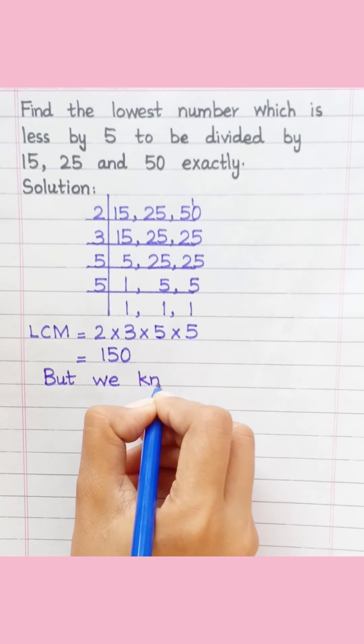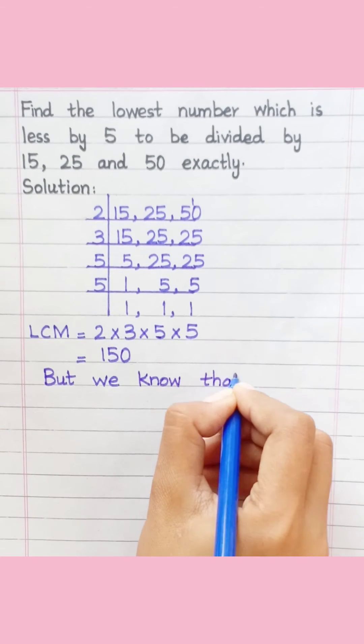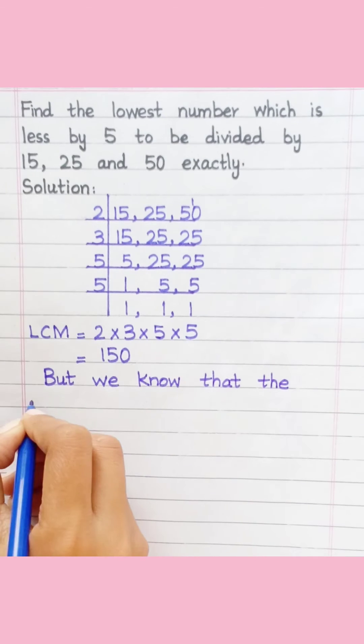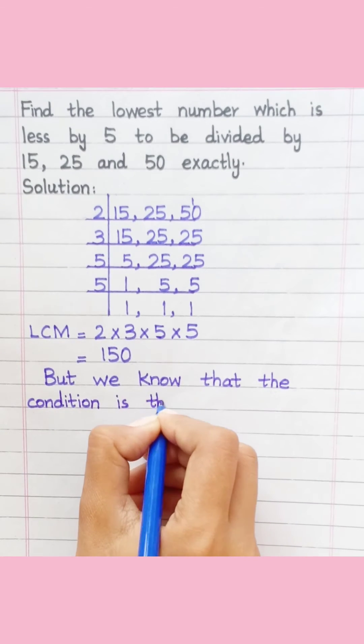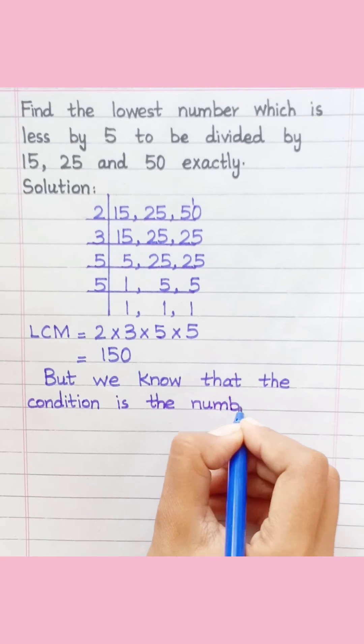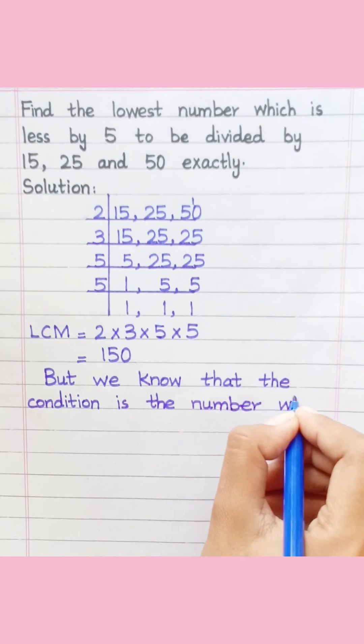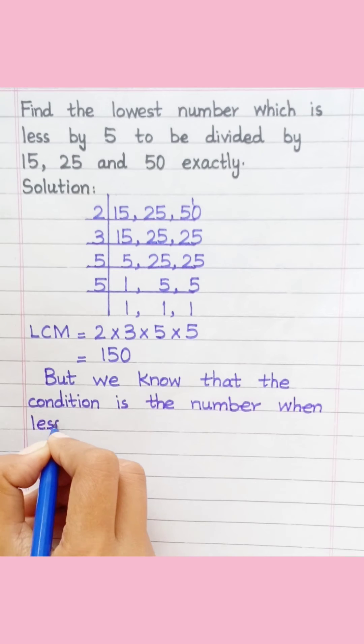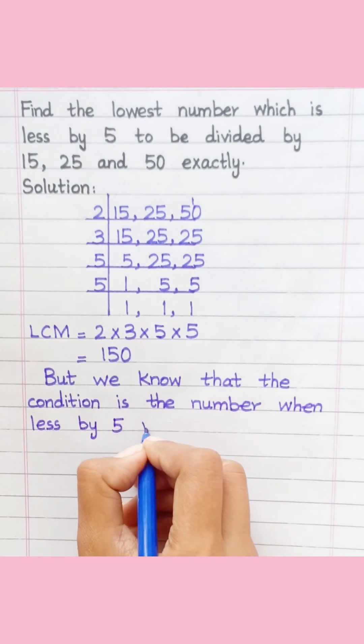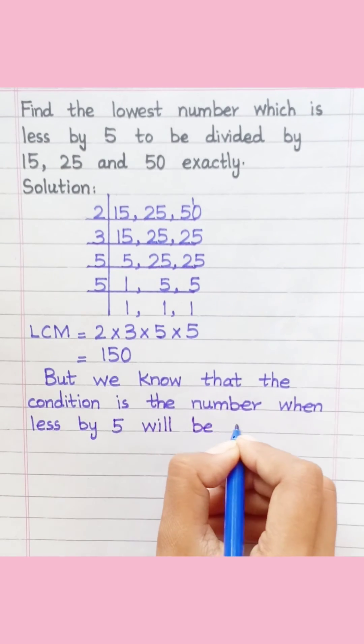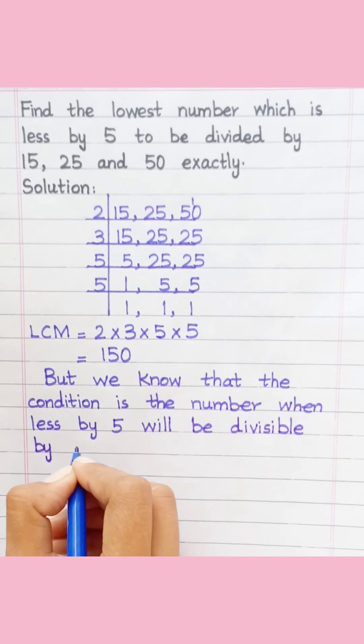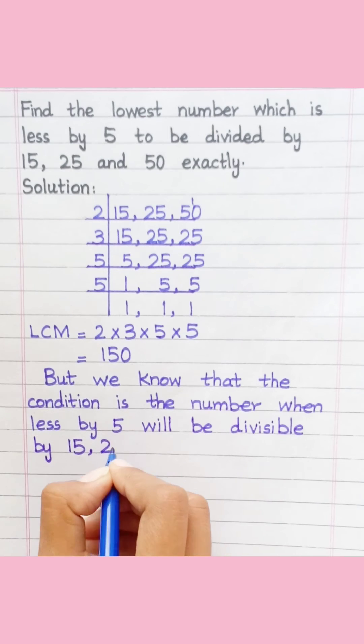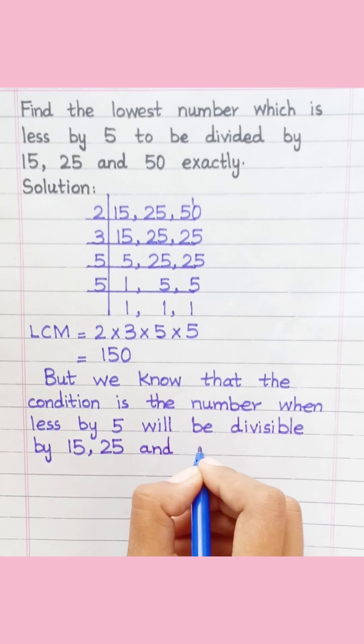But we know that the condition is the number when less by 5 will be divisible by 15, 25, and 50.